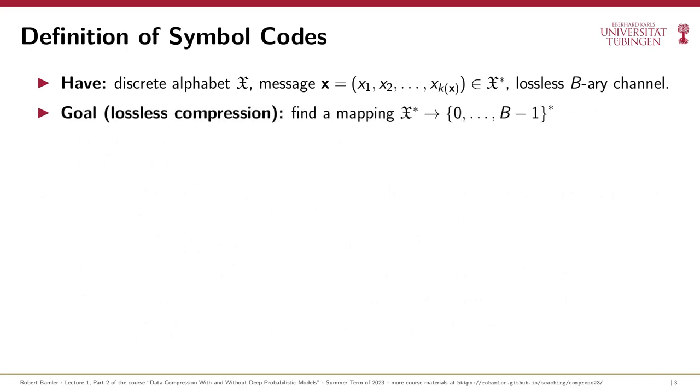In order to encode the message x, the sender needs a function that maps from the message space X star to the space of variable length bit strings. This mapping must be injective, that is invertible, so that different messages get encoded into different bit strings and there are no ambiguities when the receiver decodes the bit string. And a good compression method should in general create bit strings that are short, and we'll make this more precise towards the end of this video. We'll call a function from the message space to bit strings that satisfies these two properties a lossless compression code, or just code for short.